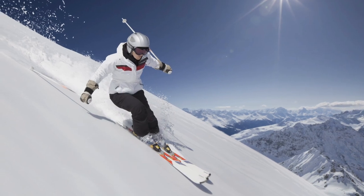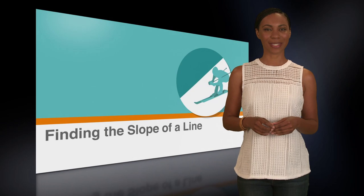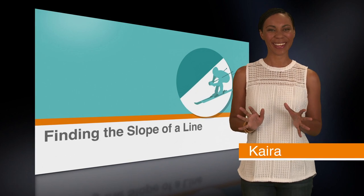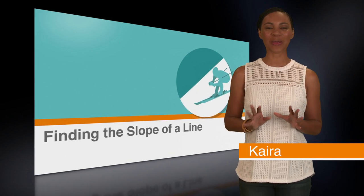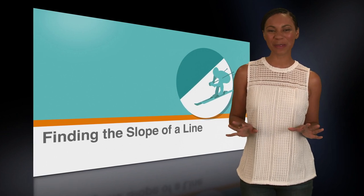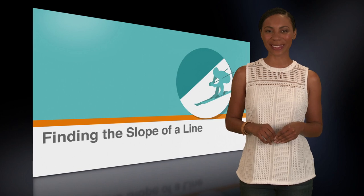In this lesson, we're going to hit the slopes. Wait, did you think we were going skiing? Well, close. We're actually going to talk about the slope of a line. By the end of this lesson, you'll find yourself gliding through any ACT question related to slopes.